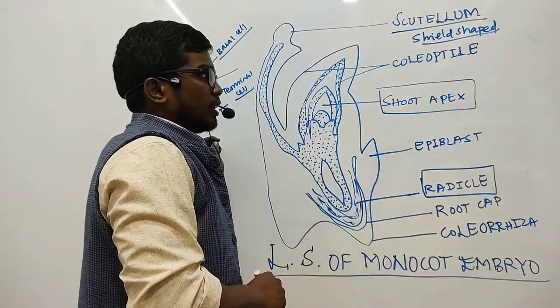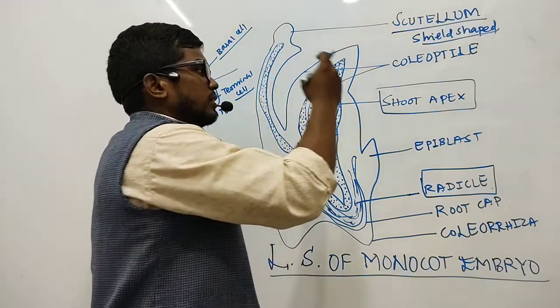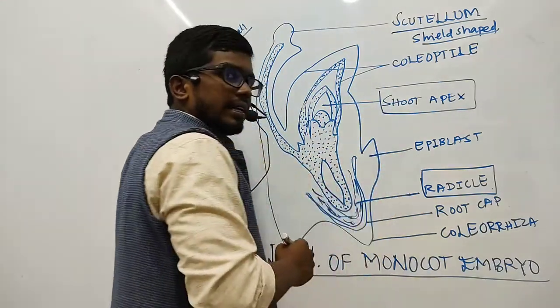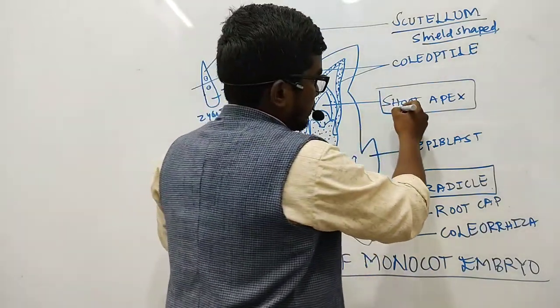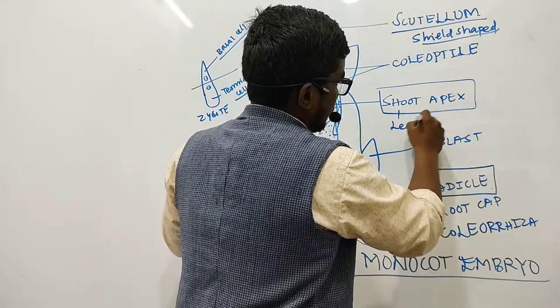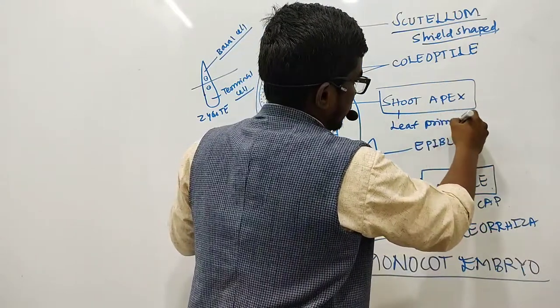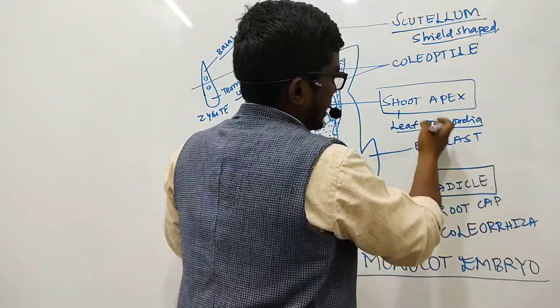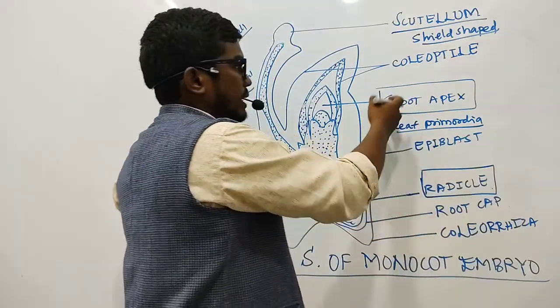So then what are the shoot apex and the radicle parts here? Shoot apex are nothing but the leaf primordia, which are nothing but the young developing leaves, folded leaves from which the first shoot arises.